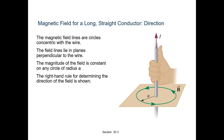For a long straight wire conductor, the magnetic field lines are concentric circles centered on the wire. The field lines lie in planes perpendicular to the wire. The magnitude of the field is constant on any circle of radius a. The right-hand rule is used to determine the direction of the magnetic field.